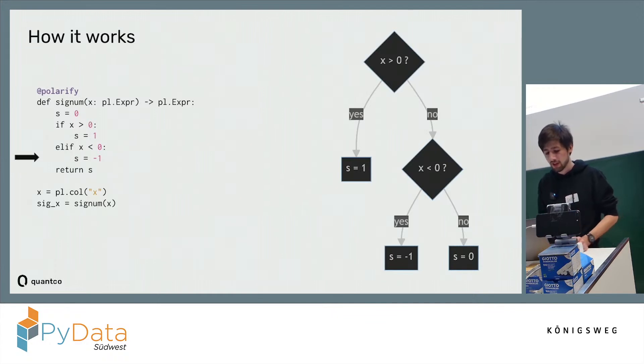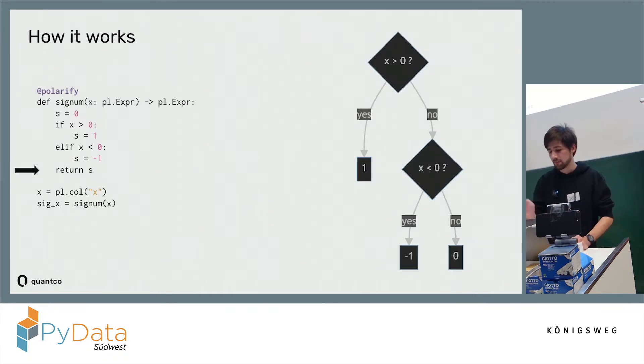We can look it up in the assignments we have been keeping track of, and then have built up this graph which notes down what each branch should return. Now Polarify only needs to translate this into a final Polars expression.